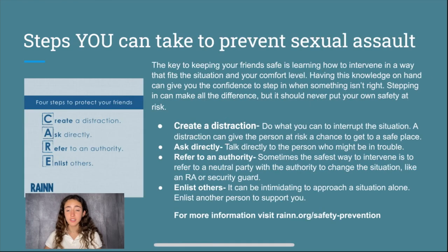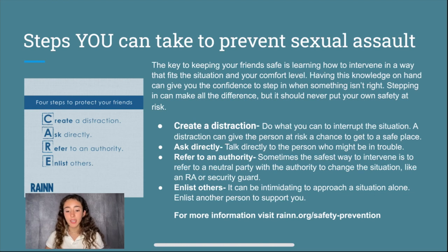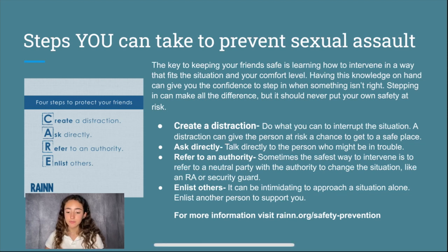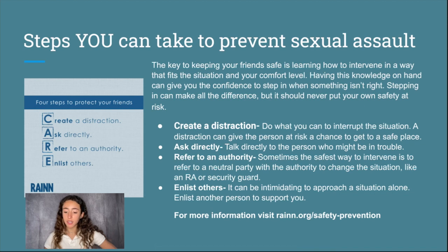Steps that you can take to prevent sexual assault: The key to keeping your friends safe is learning how to intervene in a way that fits the situation and your comfort level. Having this knowledge on hand can give you the confidence to step in when something isn't right. Stepping in can make all the difference, but it should never put your own safety at risk. Create a distraction — do what you can to interrupt the situation, as distraction can give the person at risk a chance to get to a safe place. Ask directly — talk directly to the person who might be in trouble. Refer to an authority — sometimes the safest way to intervene is to refer to a neutral party with the authority to change the situation, like an RA or security guard.